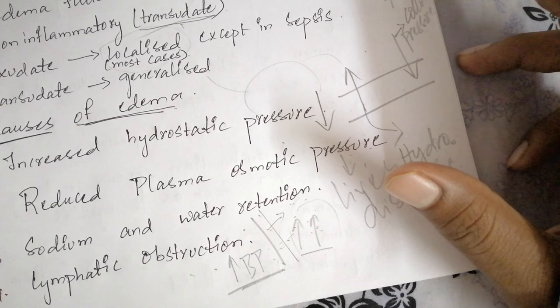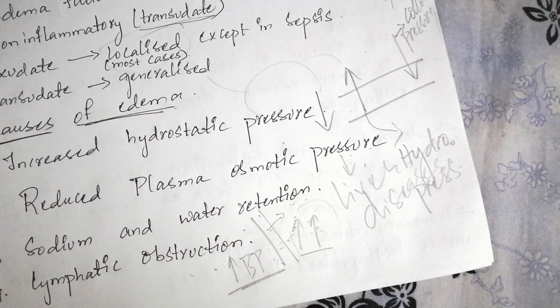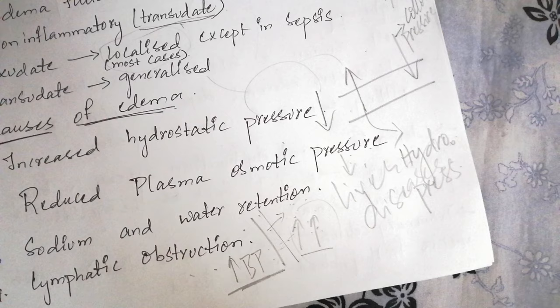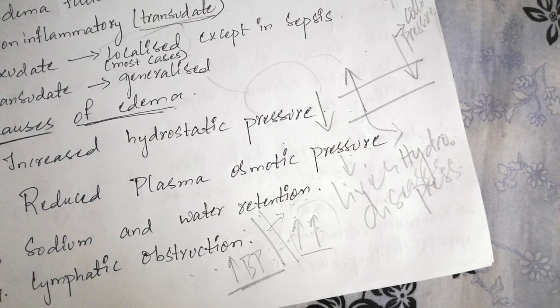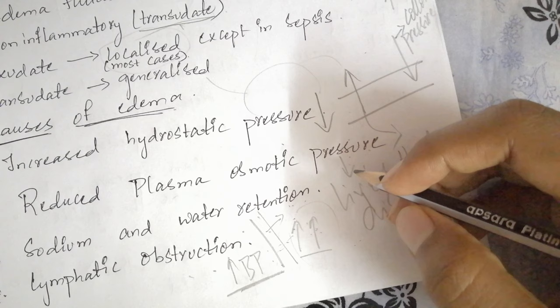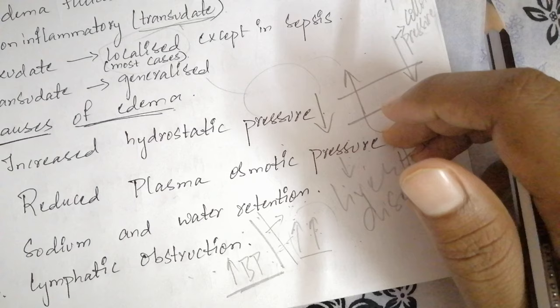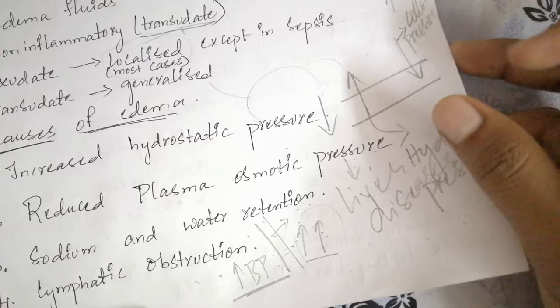A dramatic example of lymphatic obstruction is filariasis — parasitic filariasis in which the organism induces lymphatic obstruction, leading to fibrosis of the lymphatic channels and lymph nodes, resulting in massive edema of the external genitalia and lower limbs so severe it has been named elephantiasis. Lymphatic obstruction also affects breast cancer patients where it makes it much more difficult to remove the cancer completely.